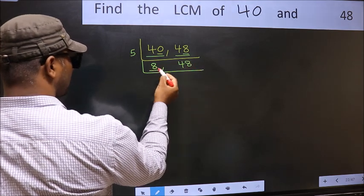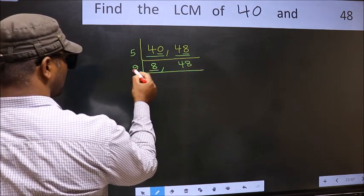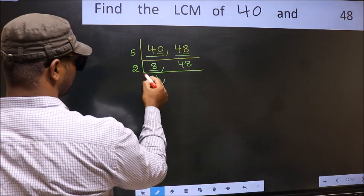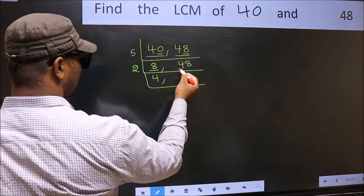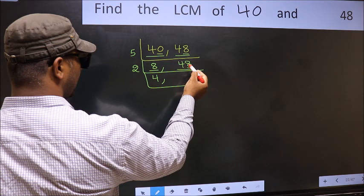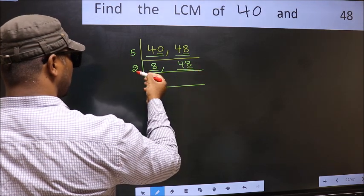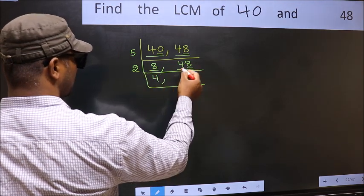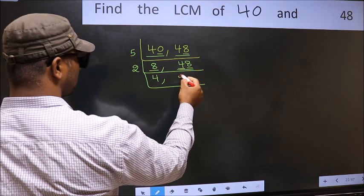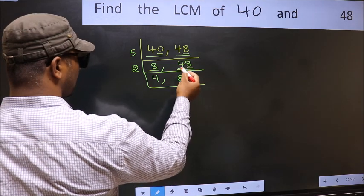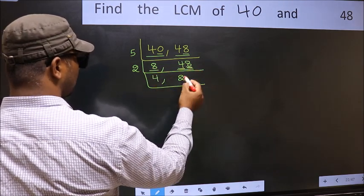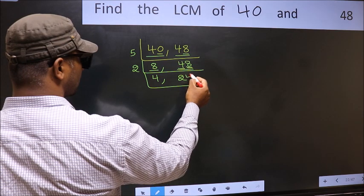Now here we have 8. 8 is 2 fours — 2 times 4 is 8. The other number is 48 — last digit 8 is even, so this is divisible by 2. The first number gives 4; when do we get 4 in the 2 table? 2 twos are 4. The other number gives 8; when do we get 8 in the 2 table? 2 fours are 8.